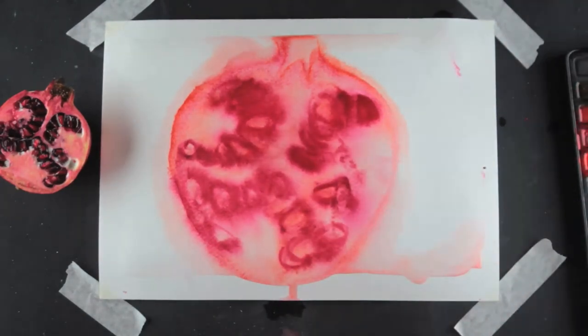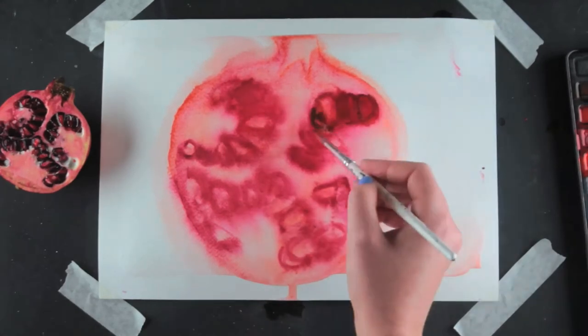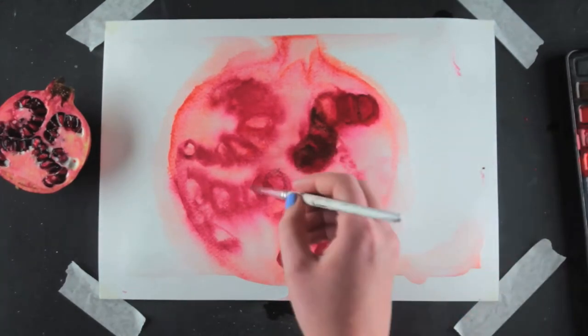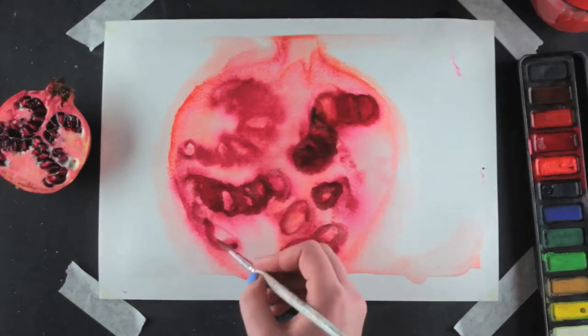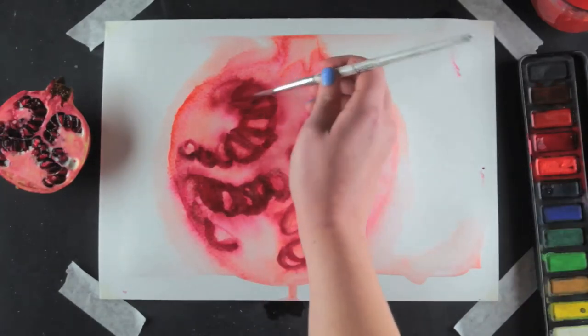Using the dark brown, which is called burnt umber, I paint around the seeds. As the water dries, the paint marks become sharper so you can add a little more detail.